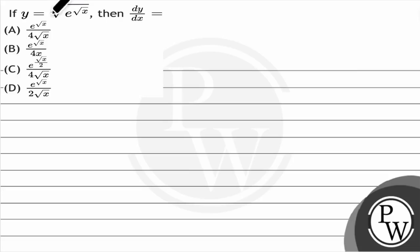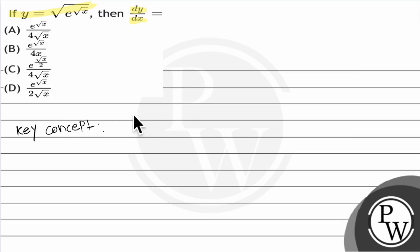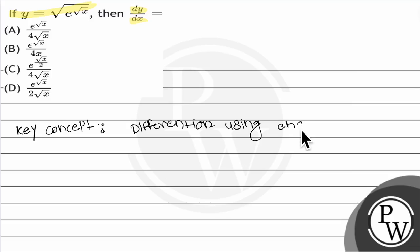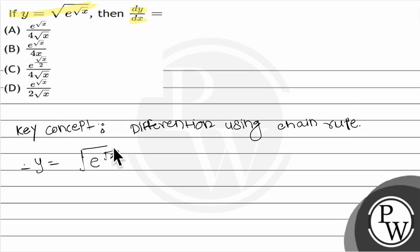Hello friends, let's discuss the given question: if y equals the square root of e to the power root x, then find the value of dy by dx. To solve this question, we use the key concept of differentiation using the chain rule — simple differentiation using chain rule. So what is y here? y equals root of e to the power root x.